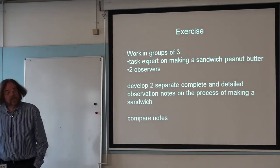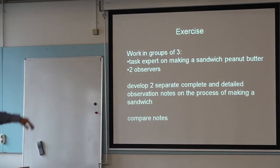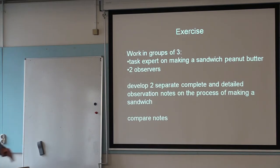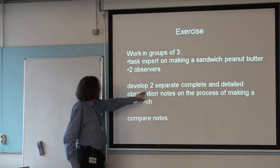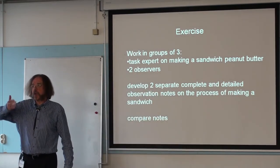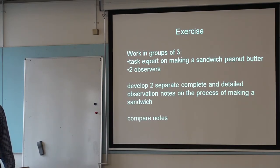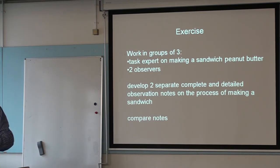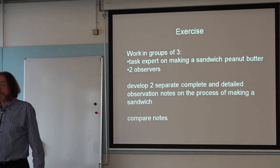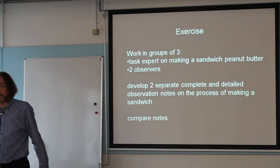Here's an exercise: find an expert on making a sandwich — peanut butter or something from your own country's tradition. Ask this person to prepare their favorite sandwich, which you can do at lunch time. Two observers develop separate, complete, and detailed observation notes — just what they see, no interpretation. Then compare notes. This shows that observation itself can easily be colored by the observer. It only works if the two sets of notes are identical; if one person has notes the other says they didn't see, then you have an interpretation problem.